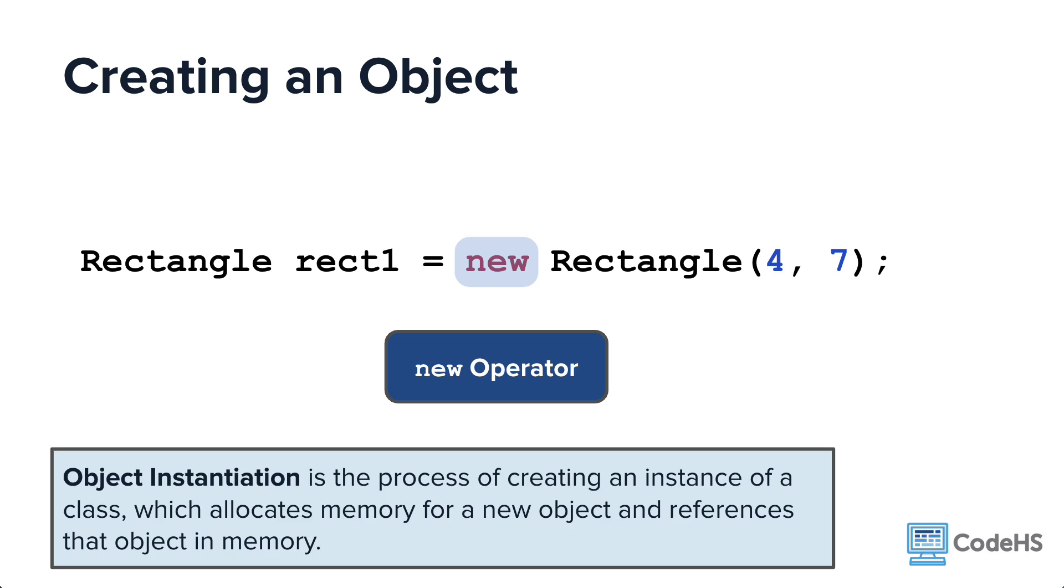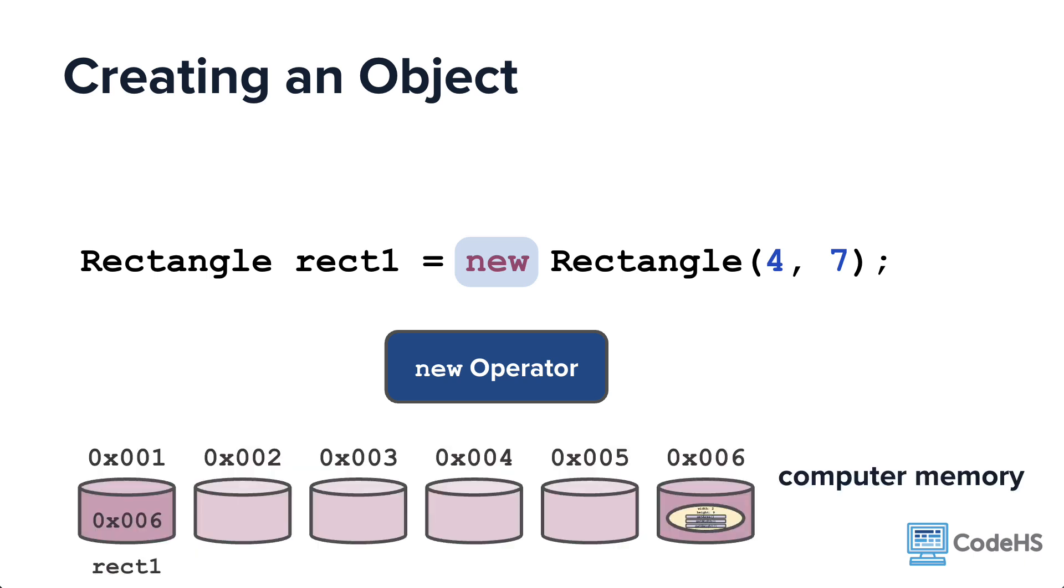Object instantiation is the process of creating an instance of the class, which allocates memory for a new object and references that object in memory. This is the same as what you've seen in previous lessons, where a location in memory, in this case at 0x006, is allocated for the new object, and then the object variable at 0x001 references that location.